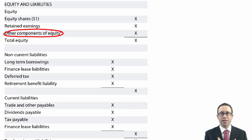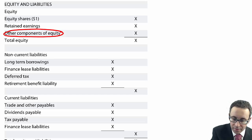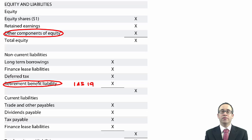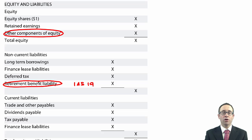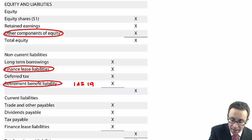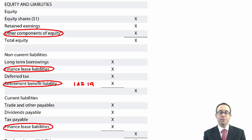In terms of your liabilities — the current and non-current split — new items you'll see include your retirement benefit liability. When we look at pensions under IAS 19, the majority of defined benefit pension schemes tend to run at a deficit, so there is an excess of liabilities over assets, and that tends to be shown in your non-current liabilities unless instructed otherwise or unless it is a retirement benefit asset. You also have your finance lease liabilities, which can be split between current and non-current.